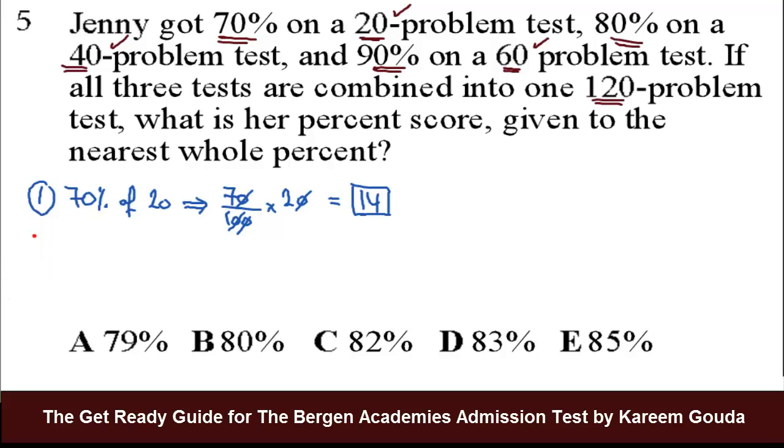Okay, on the second test, we know she got 80% of 40 problems. So quickly, 80% of 10 is 8. So 80% of 40 is 8 times 4, which is 32. So she got 32 questions correct.